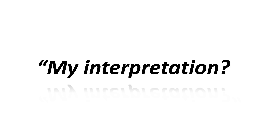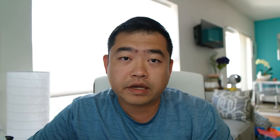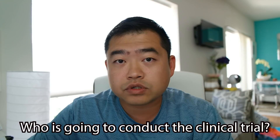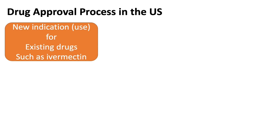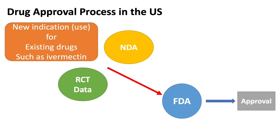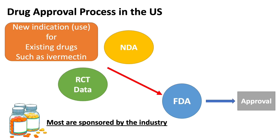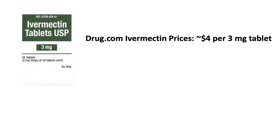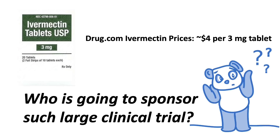So what is my interpretation? After reading through the entire meta-analysis, it basically tells me that we need a very large randomized controlled trial to see if ivermectin really does work in the treatment and prevention of COVID. But the question is: who is going to conduct and sponsor such clinical trials? Here in the US, all FDA-approved new uses for existing drugs such as ivermectin still require randomized controlled trial data and a full new drug application submitted to the FDA for approval, and most of these new applications are sponsored by the pharmaceutical industry. The likelihood for this to happen in the US is not very high because there is no monetary incentive to sponsor a very low-cost drug trial such as ivermectin.